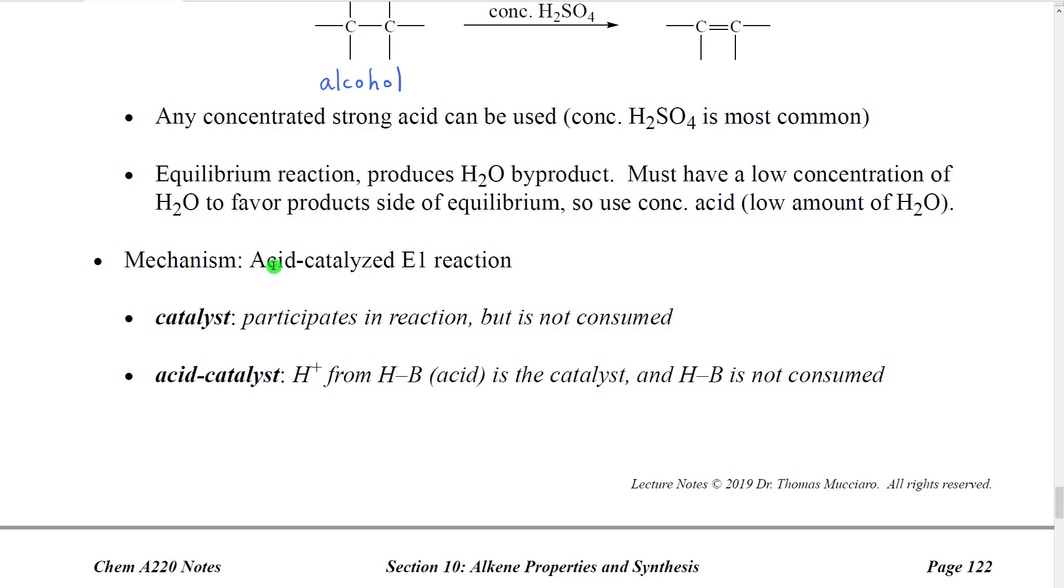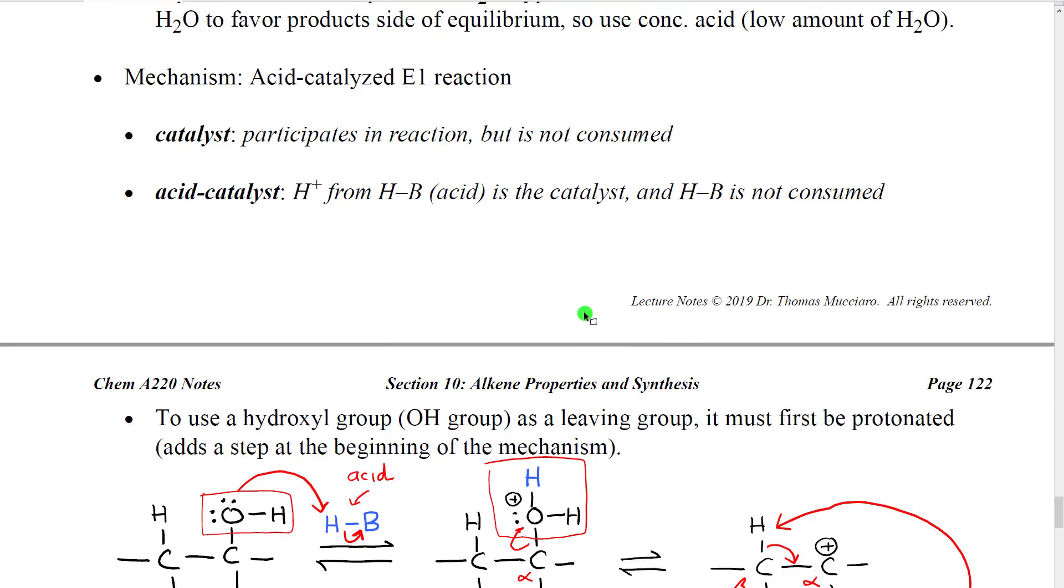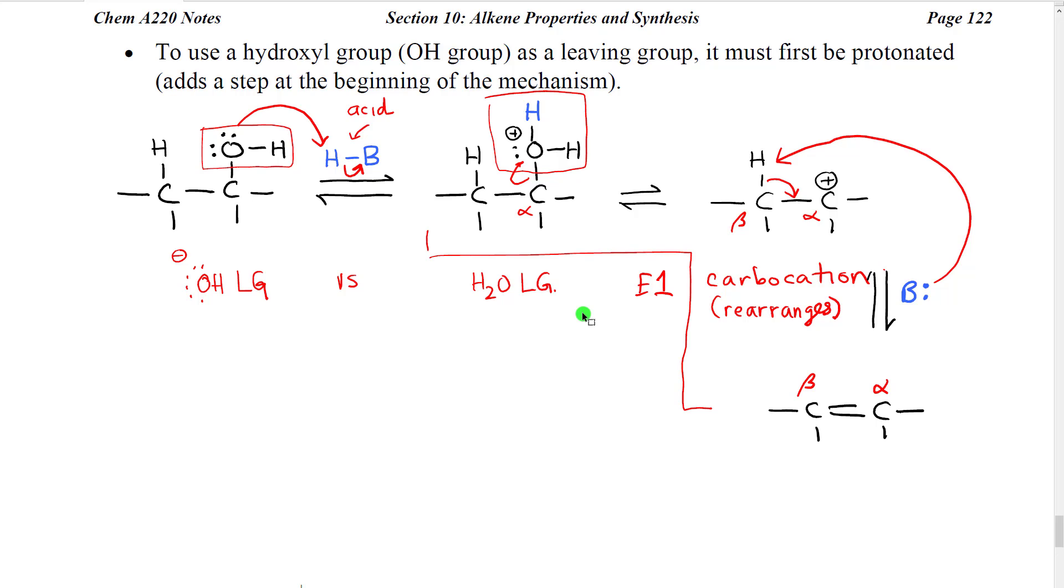Our mechanism in this reaction is what's called an acid-catalyzed E1, so it more or less follows the E1 but we're going to have an extra acid-base reaction step to make our leaving group a better leaving group. Let's talk briefly about what a catalyst is. A catalyst is a species that participates in the reaction, it actually reacts, but it's not ultimately consumed because at some point in the reaction we get it back. So an acid catalyst would be a situation where we get a hydrogen plus from an acid, but then at the end we get that hydrogen plus back by deprotonating one of the intermediates.